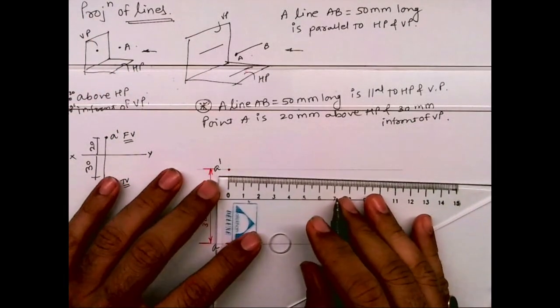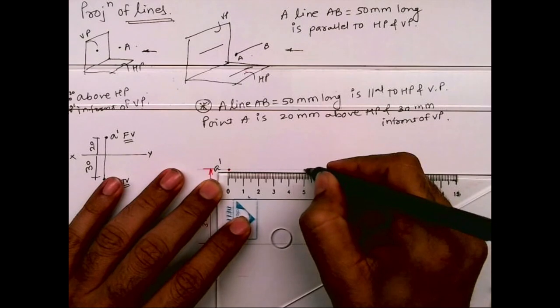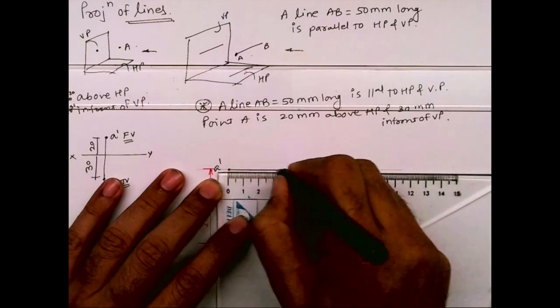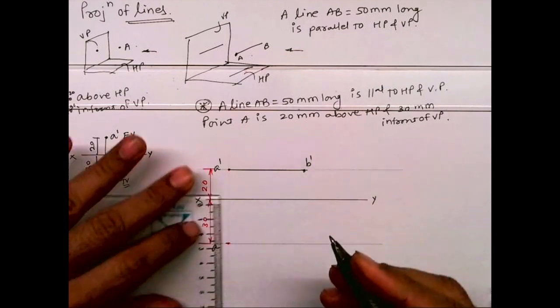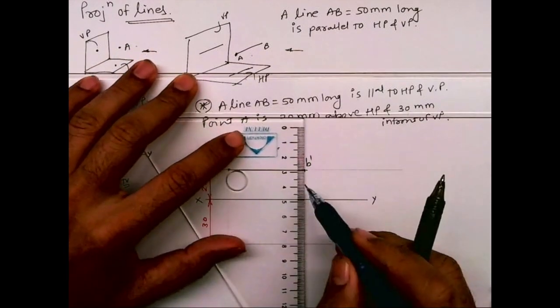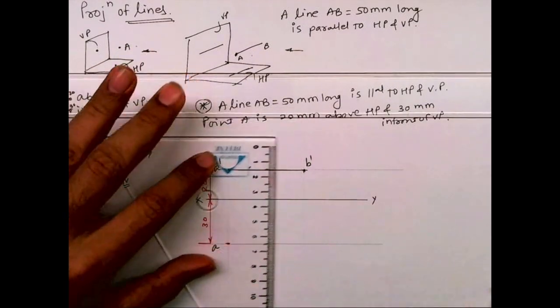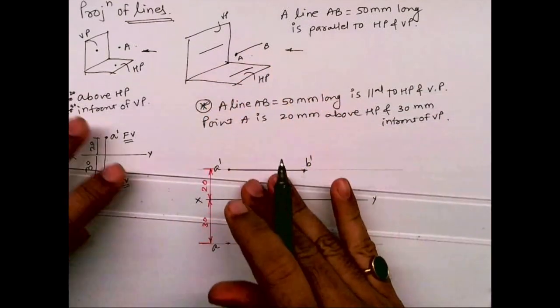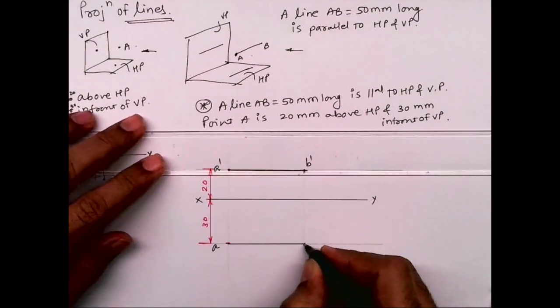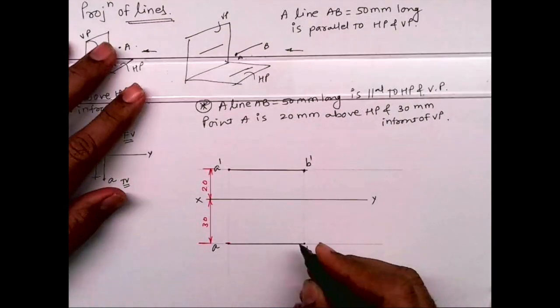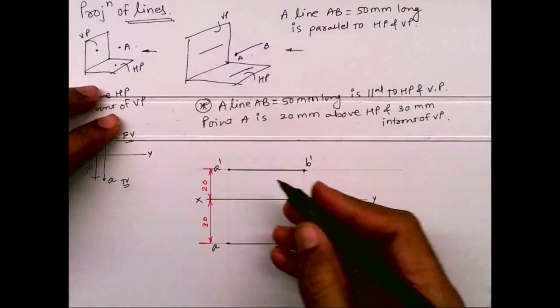Now I need to mark point B. And see, whenever line is parallel to HP and VP, front view and top view both will be a straight line. So this is how you got front view. And from here you will draw vertical line, wherever it will cut that is point B. So this is what you'll get, front view and top view.